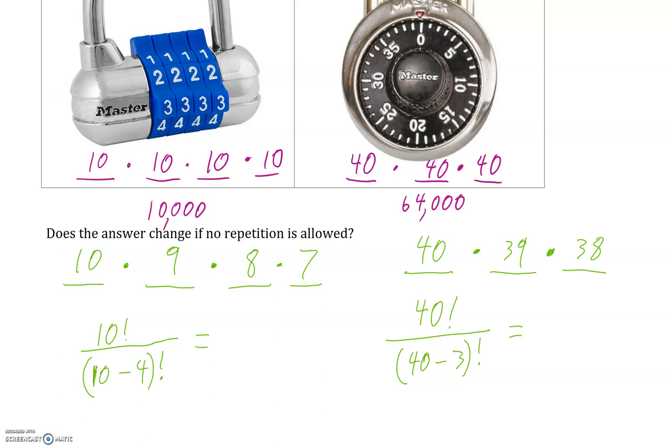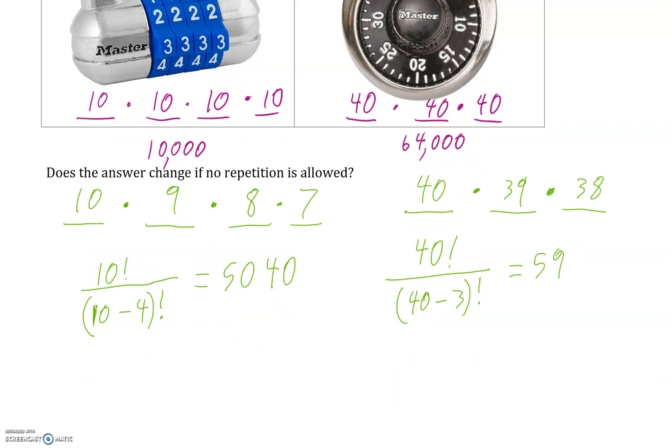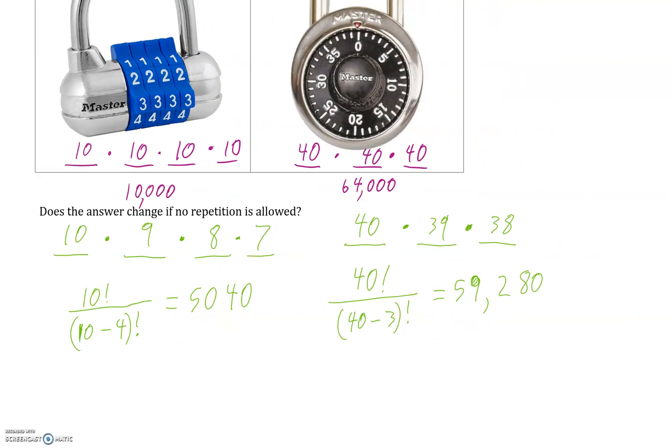So ten factorial over ten minus four factorial. And this gives us five thousand forty different versions of the password. And our next option would be forty factorial over forty minus three factorial. So definitely lower than before, but you can see that since we have such a big number, getting rid of three at the bottom of our fraction doesn't quite change it by as much as when we have a smaller number.